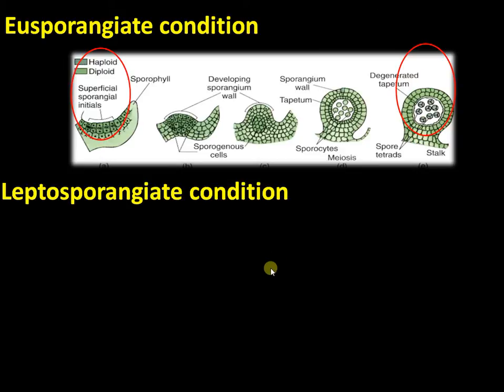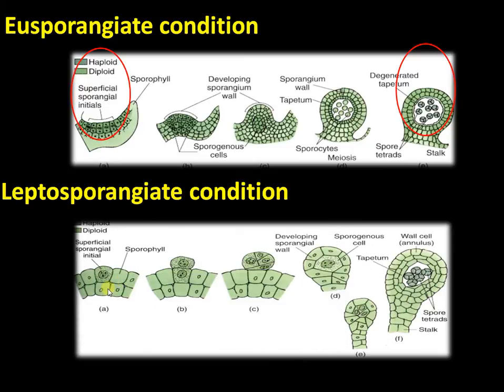In the leptosporangiate condition, a single superficial initial cell divides and further divides, ultimately forming the sporangium. The size of this sporangium is small and there are fewer spores compared to the eusporangiate condition. The leptosporangiate condition is seen in advanced ferns and is therefore considered an advanced condition, whereas the eusporangiate condition is seen in primitive ferns.